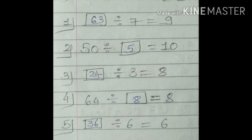Number 2: 50 divided by dash equals 10. If we divide 50 by 5, the answer is 10. So the answer in the box is 5, meaning 50 divided by 5 equals 10. Let's see number 3: dash divided by 3 is equal to 8. Here we multiply 8 by 3. 8 threes are 24. So the answer in the box is 24. I have already written it.